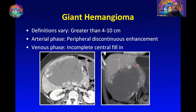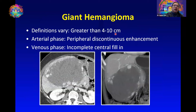Sometimes hemangiomas can get to be very big and are called giant hemangiomas. The definitions vary from either greater than 4 cm to up to greater than 10 cm to be considered a giant hemangioma.